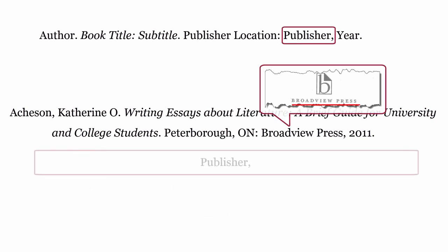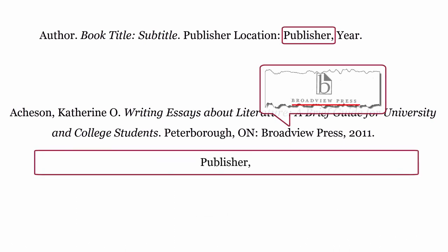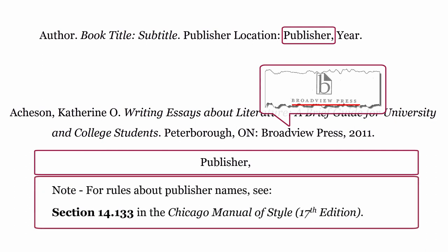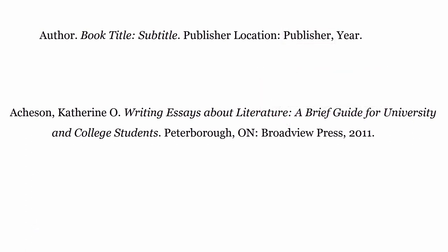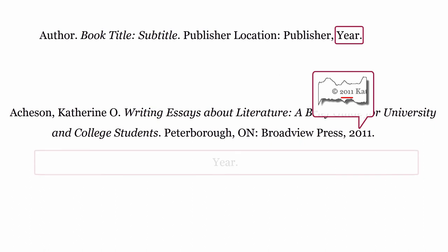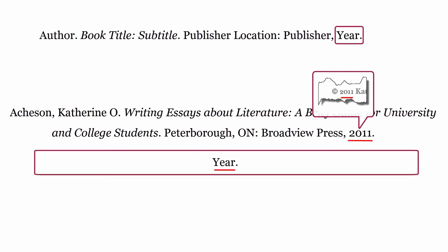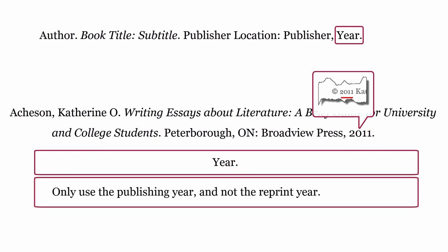Publisher: this is who published the book. The publisher is formatted using the publisher's name, then a comma. For rules about publisher names, see 14.133 in the Chicago Manual of Style, 17th edition. Year: this is the year the book was published, formatted with only the year and then a full stop. Only use the publishing year, and not the reprint year.